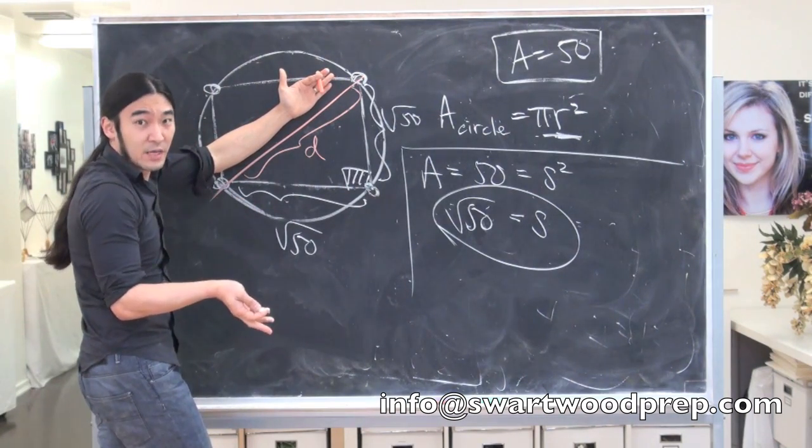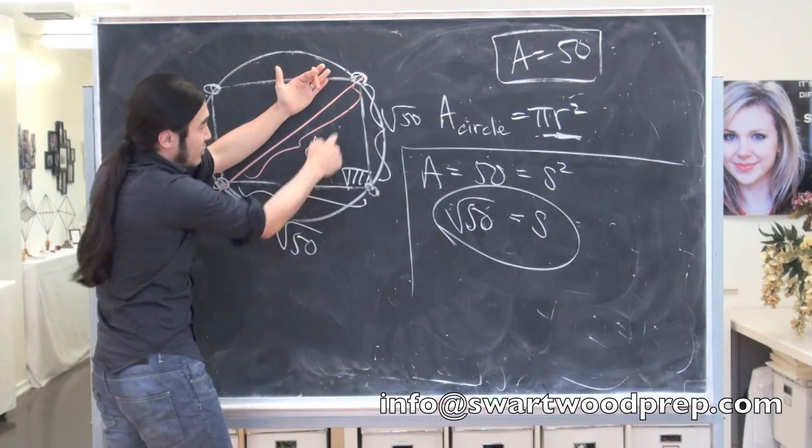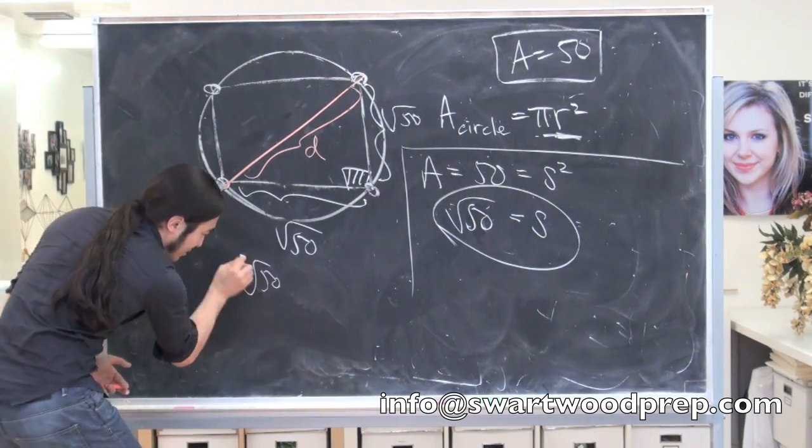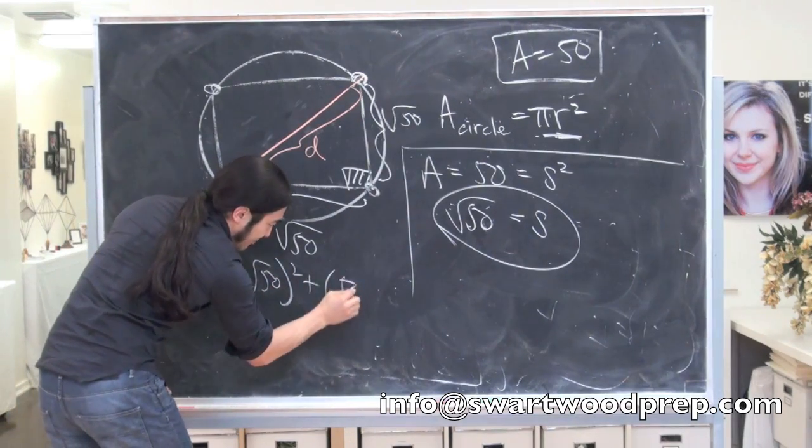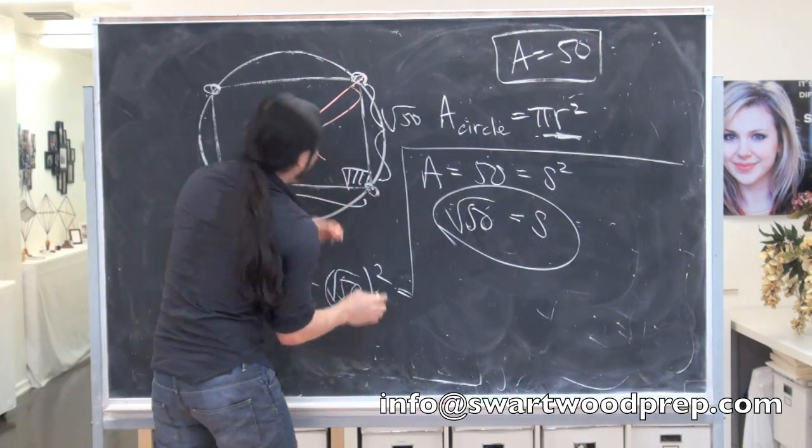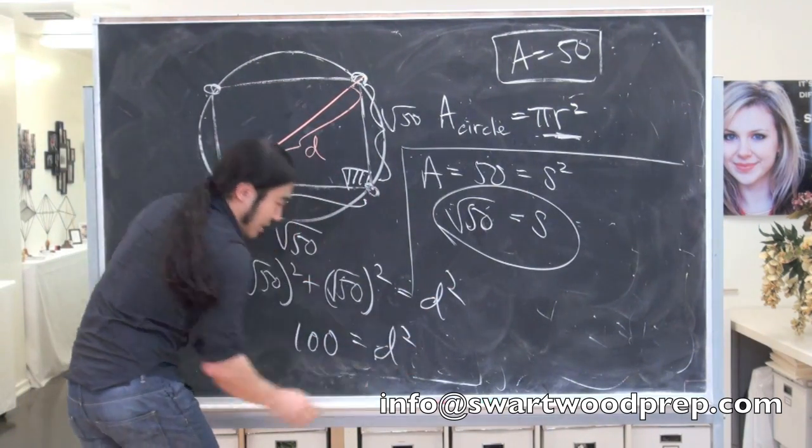So there's a shortcut for that. Or you can do Pythagorean. So let's do Pythagorean for a second. So you know 50 squared plus 50 squared equals the length of this side squared, right? But then square root of 50 squared plus square root of 50 squared, that's just 50 plus 50. So that's the length of this guy, d squared.